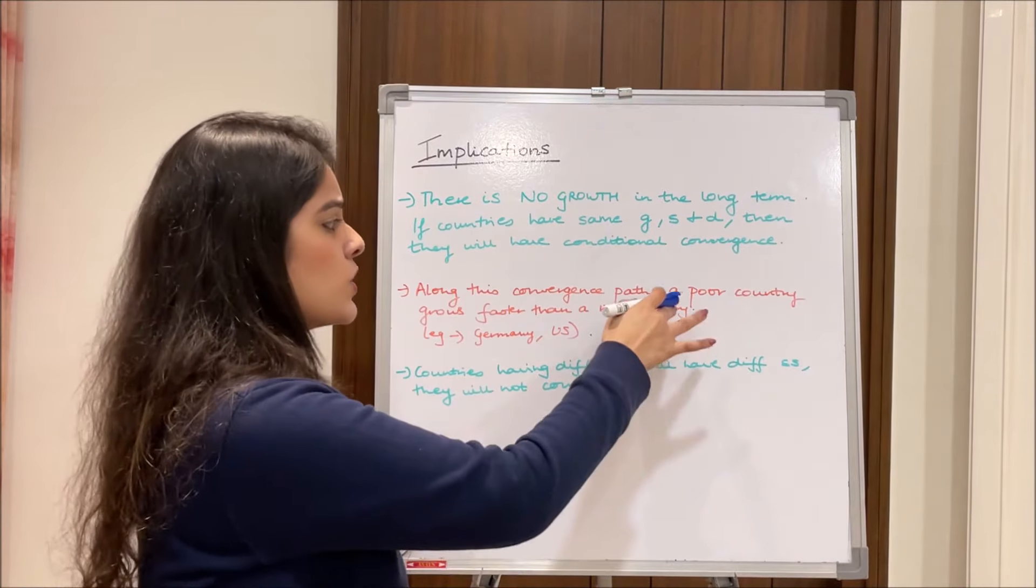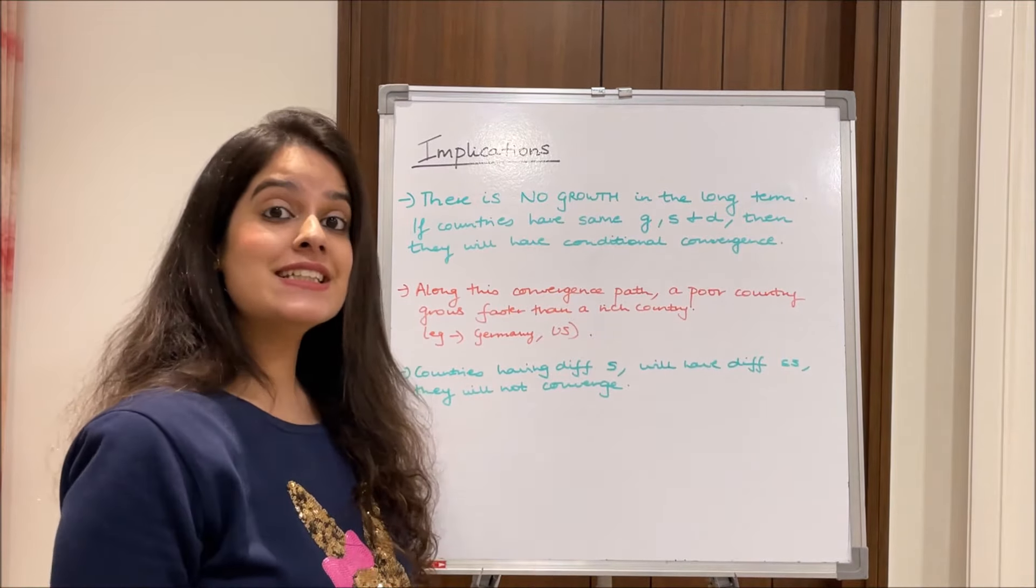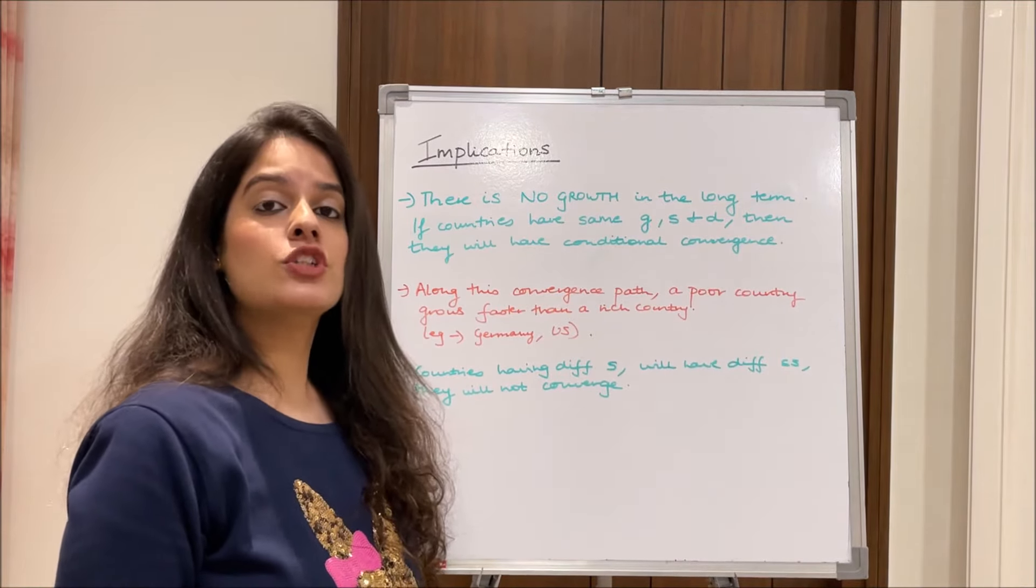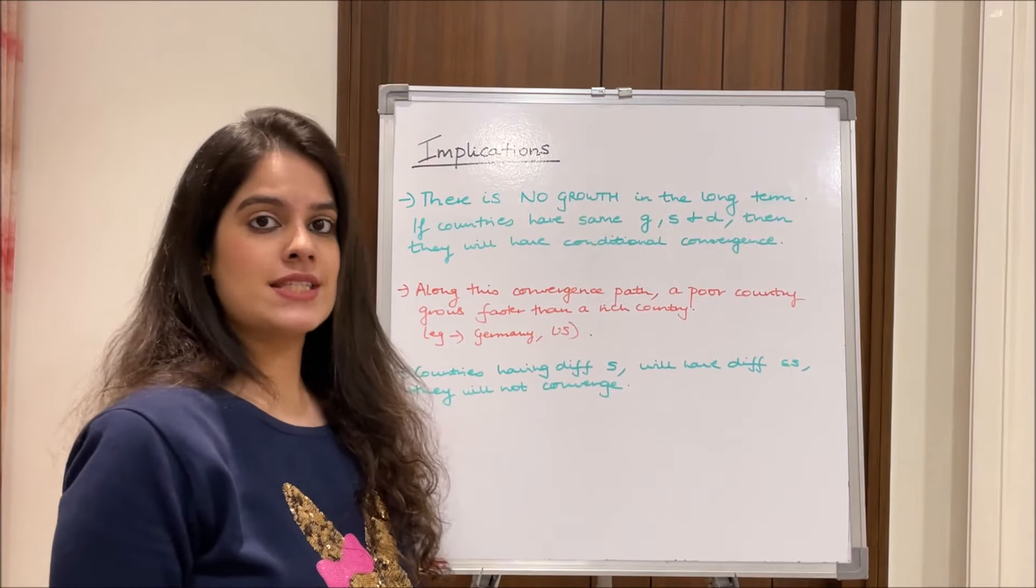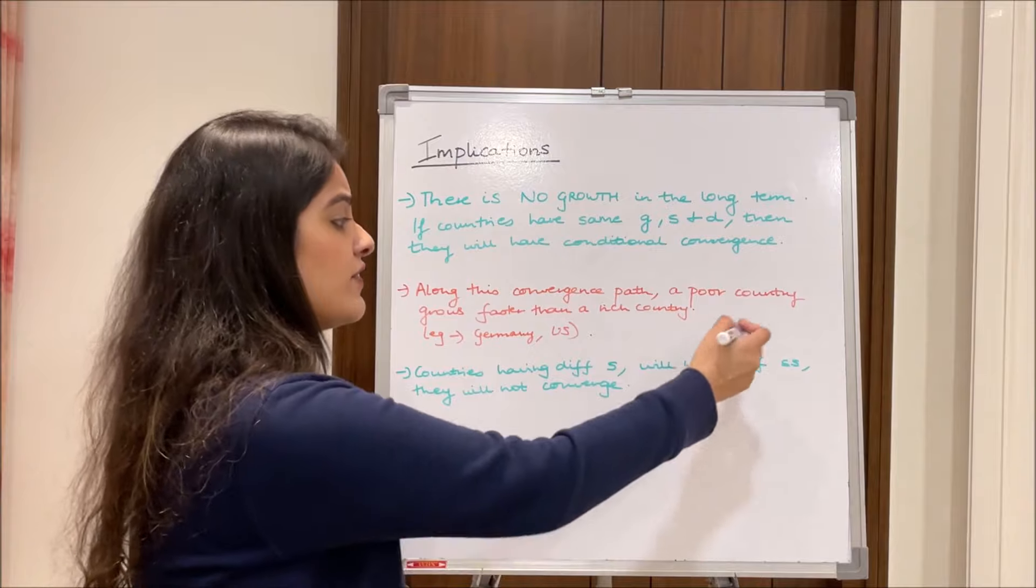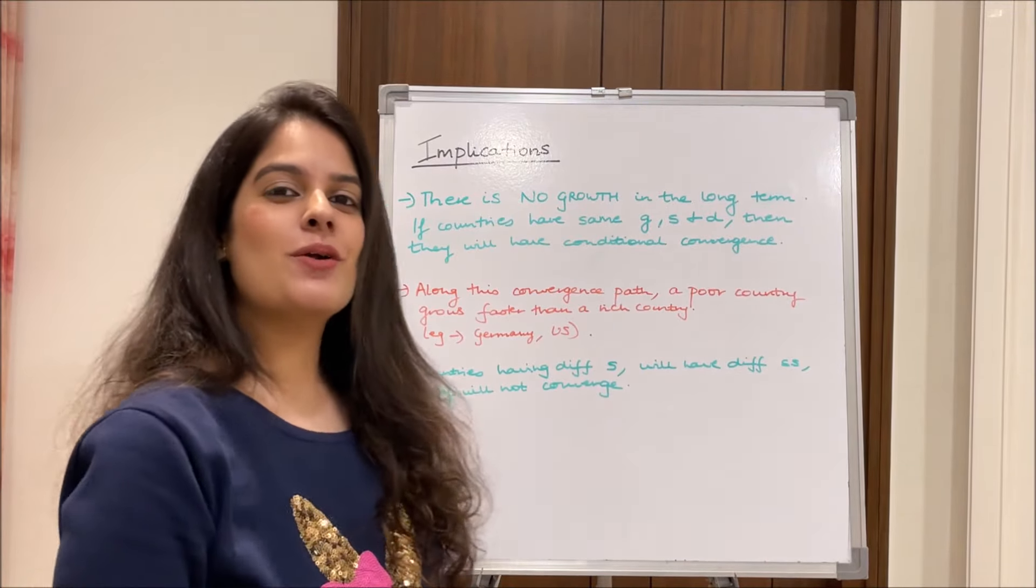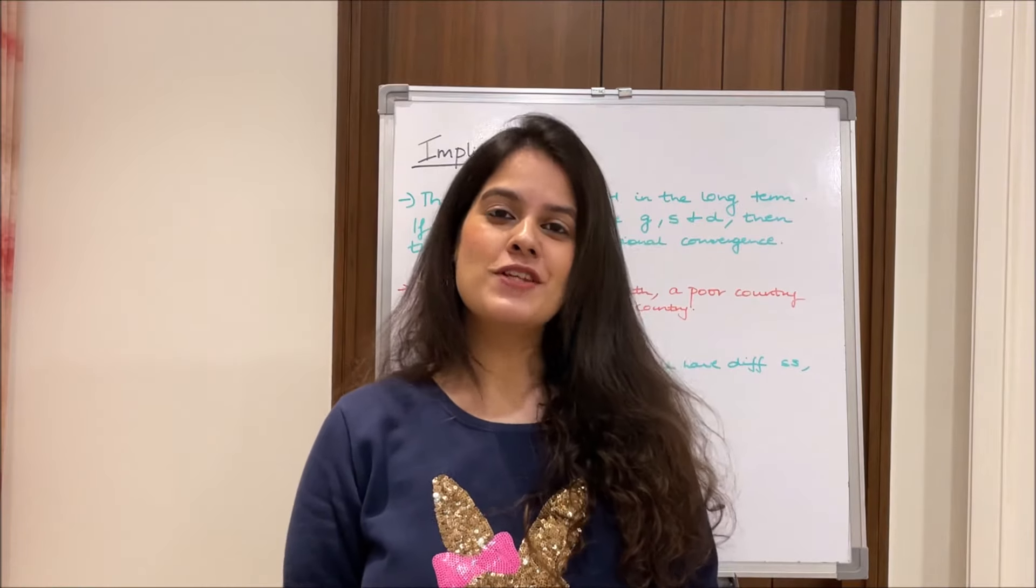Along this convergence path a poor country will always grow faster than a rich country, the reason why after World War II Germany grew faster than US. And lastly countries having different saving rates will have different steady states and will not converge. So this is all about the Solow model guys, I hope this video was useful for you.